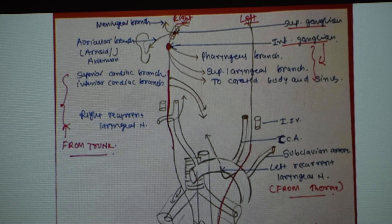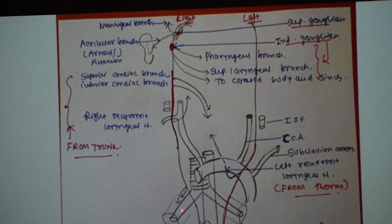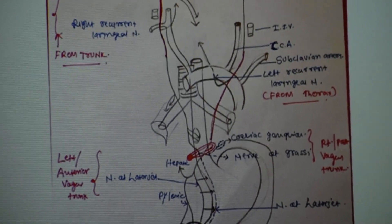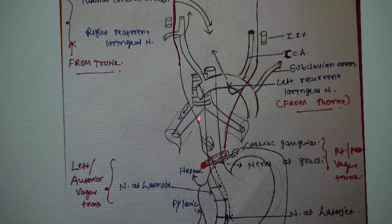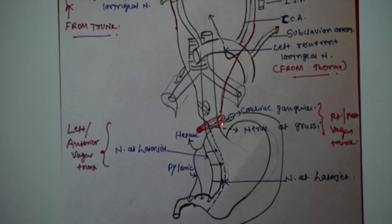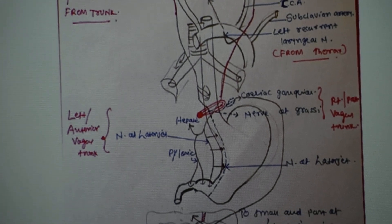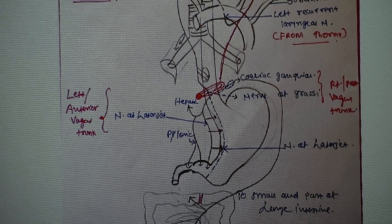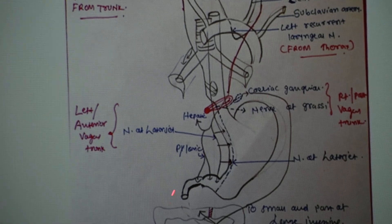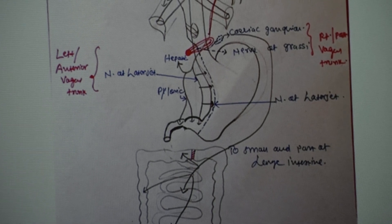The vagus nerve lies between the common carotid artery and internal jugular vein. It then passes through the root of the neck and enters the thorax, lying behind the root of the lung where it supplies various parts of the thoracic cavity. It then passes through the esophageal hiatus — the opening for the esophagus in the diaphragm, located at the level of the T10 vertebra — and enters the abdominal cavity to mainly supply the stomach and other alimentary organs.